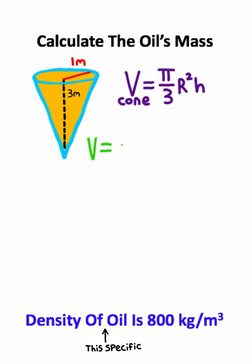So the volume of this cone is equal to pi divided by 3 multiplied by the radius squared, where the radius is 1 meter. Now I need to take this whole thing and multiply it by the height, and the height in this case is 3 meters.